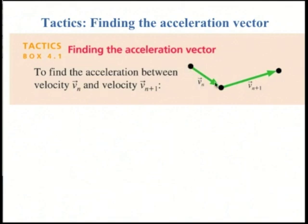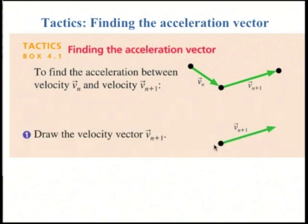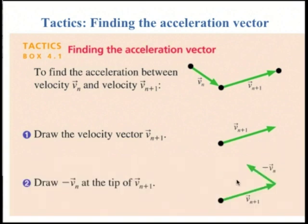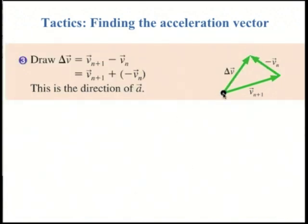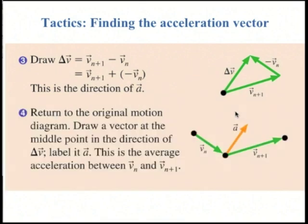To find the acceleration vector, you start first with a motion diagram with two velocity vectors, v sub n and v sub n plus 1. Draw the vector of the second vector, and then draw negative of the first vector at the tip of n plus 1. We're subtracting these two vectors to form delta v. Delta v connects the tail of the second to the head of the first, the negative first one. This delta v vector is in the direction of the acceleration. So now back on the original motion diagram, you can draw the acceleration vector at the middle point of the three points. And this is the average acceleration between v sub n and v sub n plus 1.